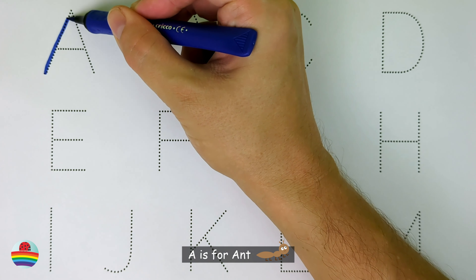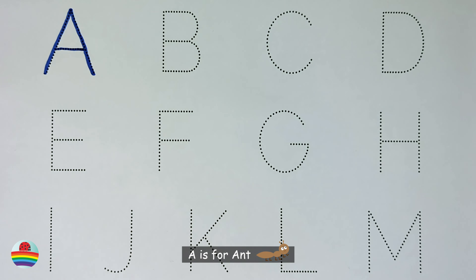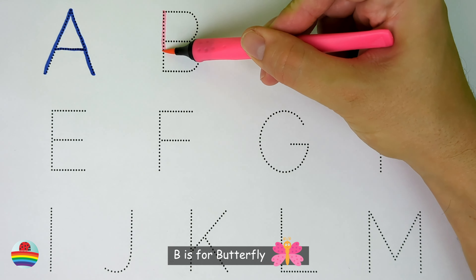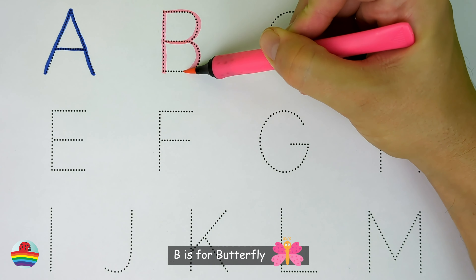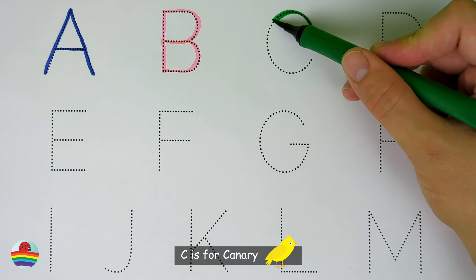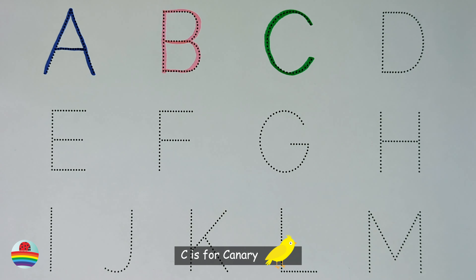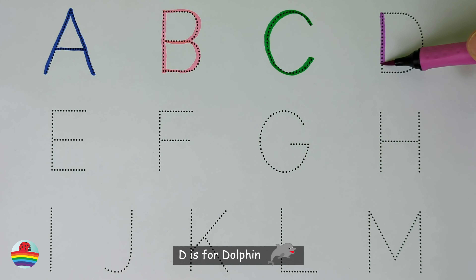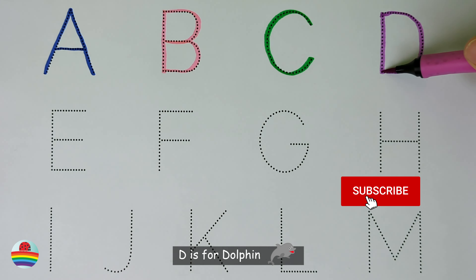A. A is for ant. B. B is for butterfly. C. C is for canary. D. D is for dolphin.